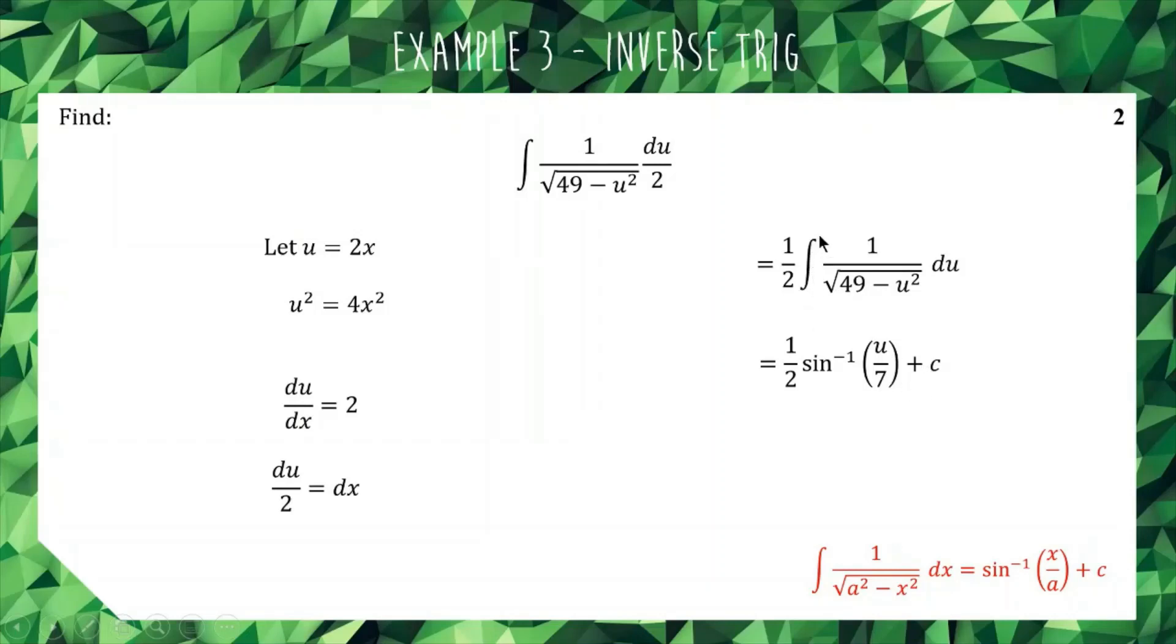We have 1/2 times sin⁻¹(u/7). Don't forget your plus c, because this is an indefinite integral. And now to finish off our answer, we just need to back substitute where we started, which is that u = 2x. And so we get 1/2 sin⁻¹(2x/7) + c.